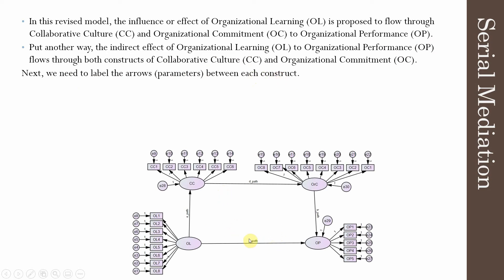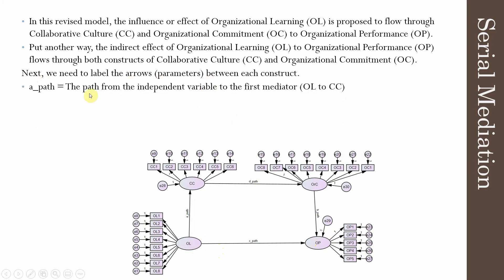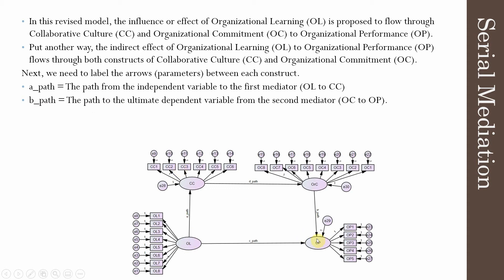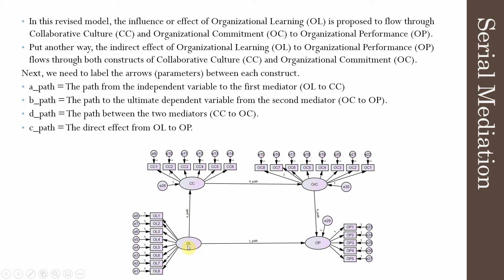The IV, organizational learning, impacts collaborative culture, which influences organizational commitment, and that influences organizational performance — a chain of relationships. The A path is from your IV to your first mediator, OL to CC. The B path is the relationship of organizational commitment (OC) to OP. The D path is the relationship between the two mediators. And the C path is the original direct relationship between IV and DV.